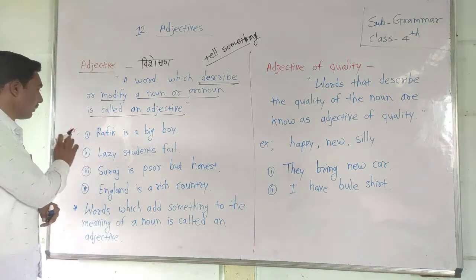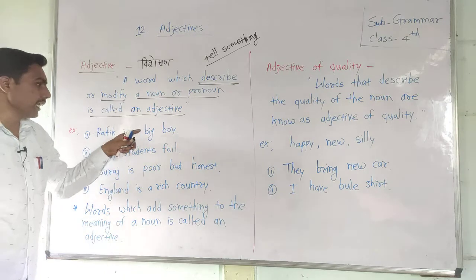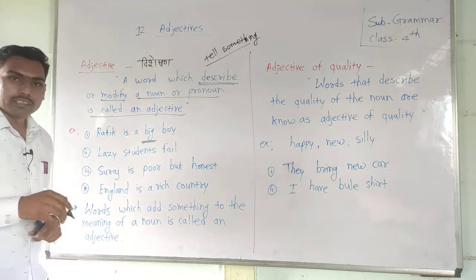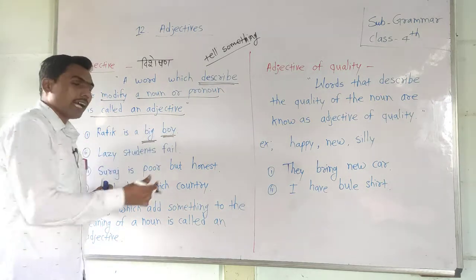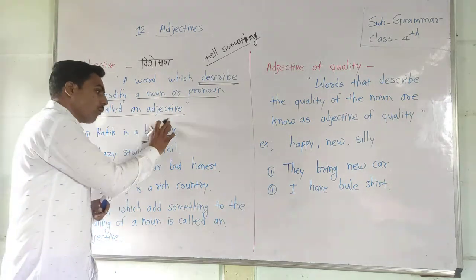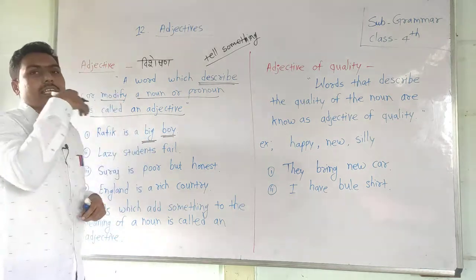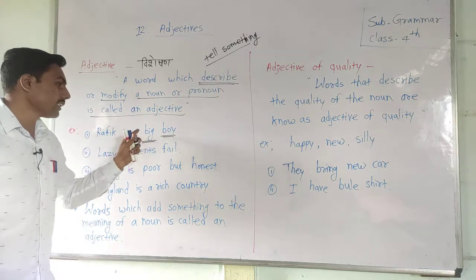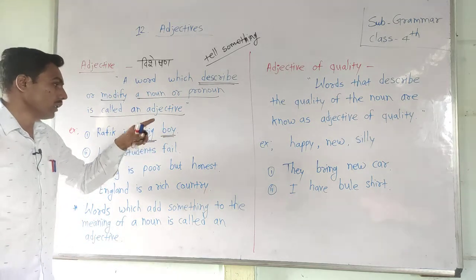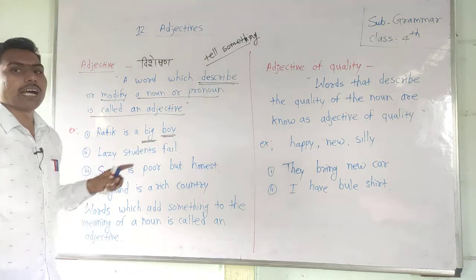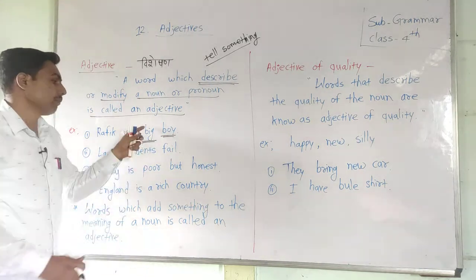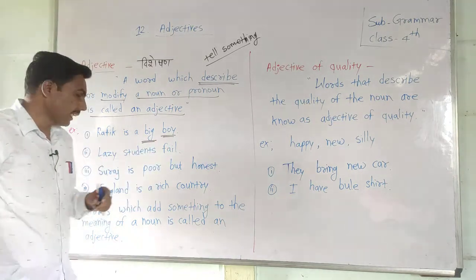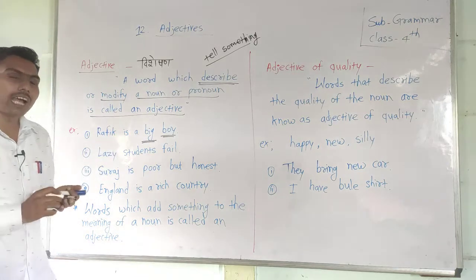For example, look here: 'Rafiq is a big boy.' In this example, the word 'big' describes the noun 'boy' — so 'big' is the adjective. Another example: 'lazy students' — here 'lazy' describes and modifies the noun 'students.'